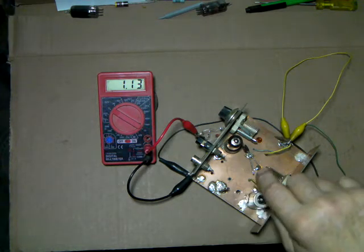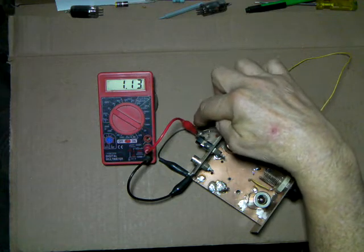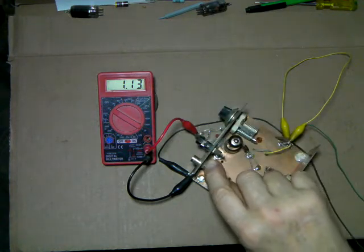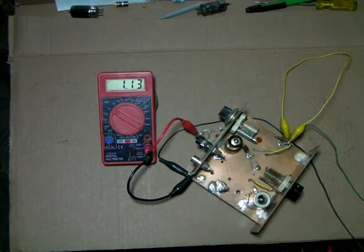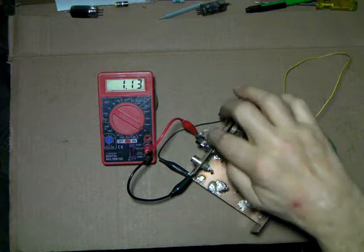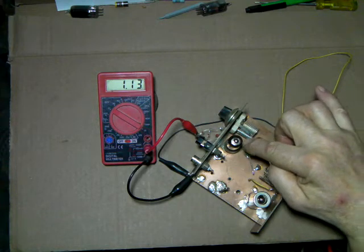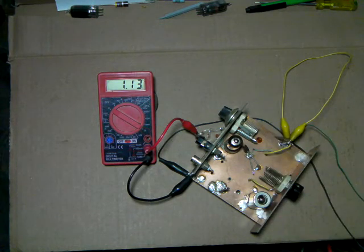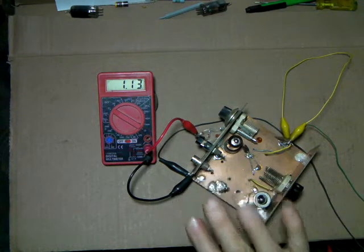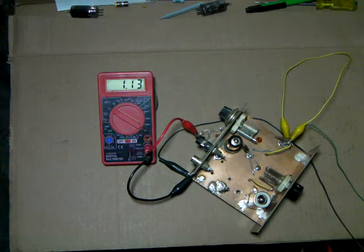The circuit that this meter is hooked to, I described it maybe one more video back, it's a little RF probe sampling the plate circuit of this tube and it makes a DC voltage that I can read on the voltmeter.